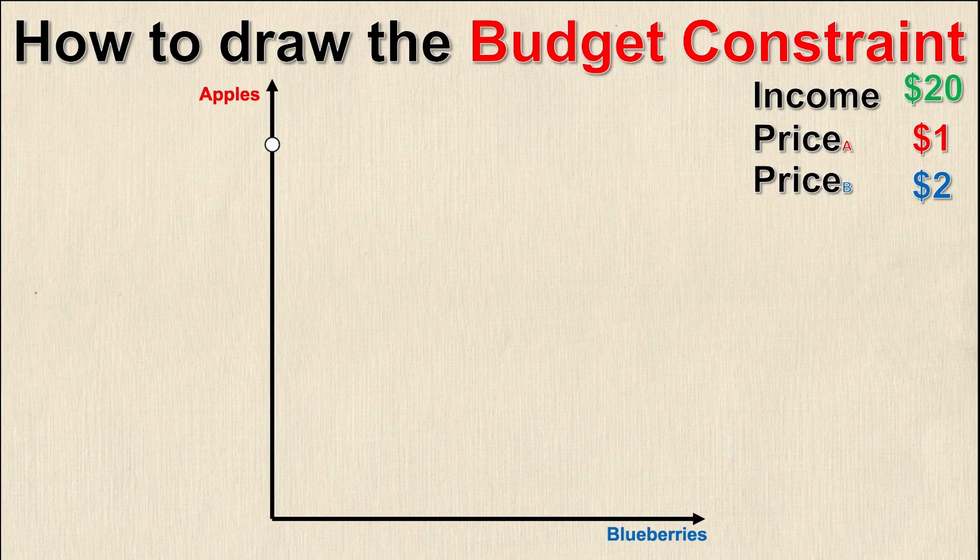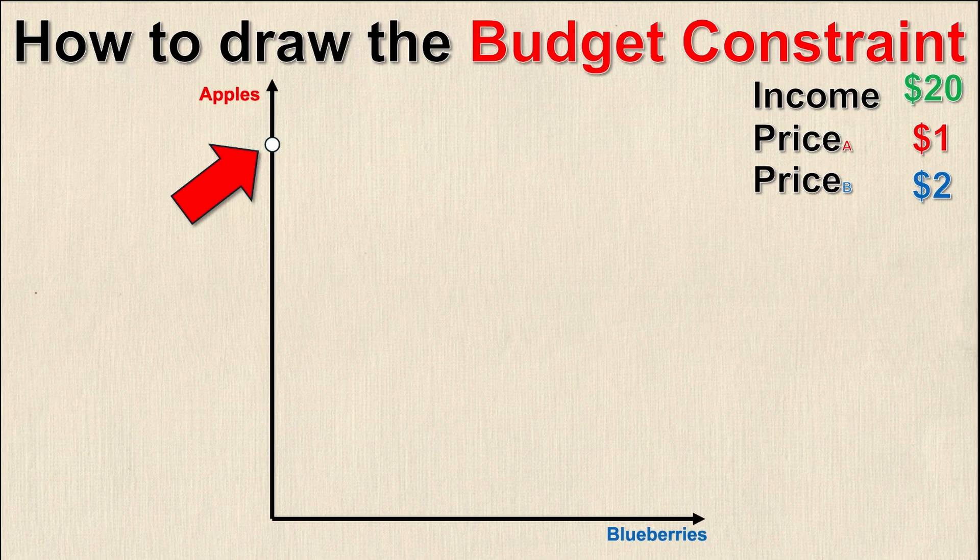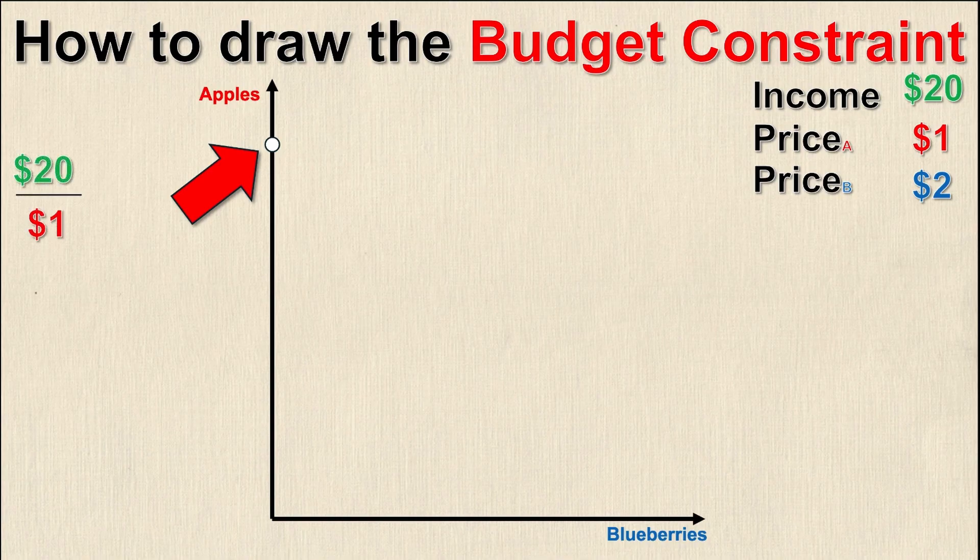I'm going to start with the y-intercept. At this point I know that my x value, blueberries, must equal zero because I'm on the y-axis. So if I consumed zero blueberries and spent all my income on apples, how many apples could I buy? That's easy. I take my $20 and divide it by the $1 per unit of apples, and that gives me 20 apples.